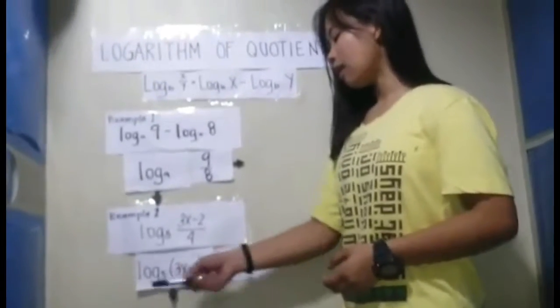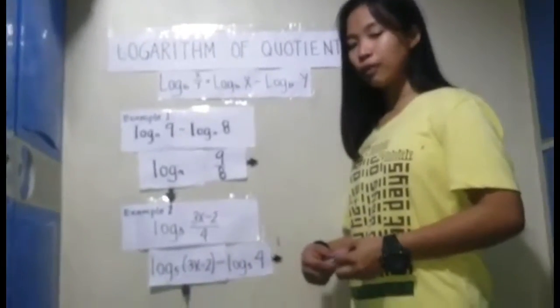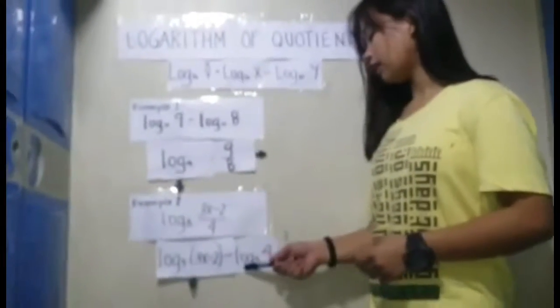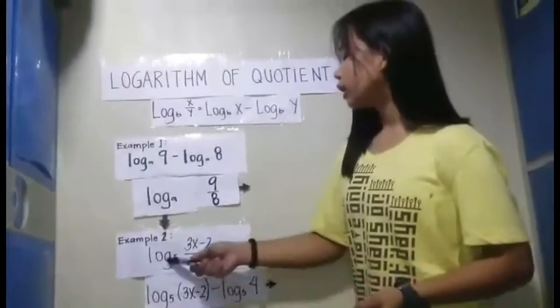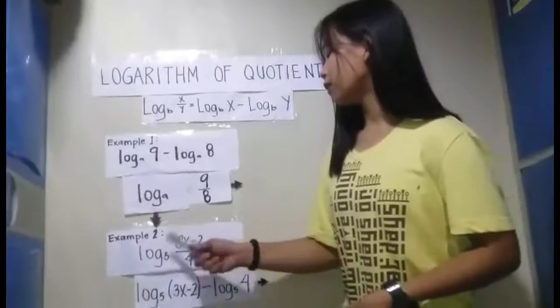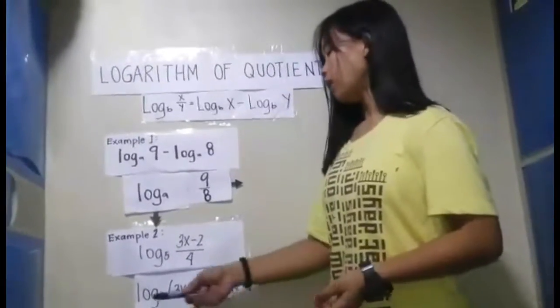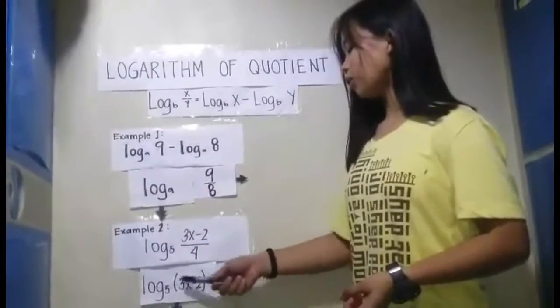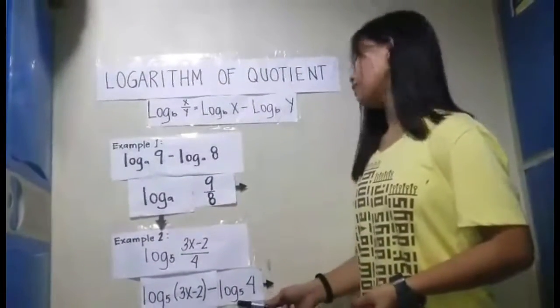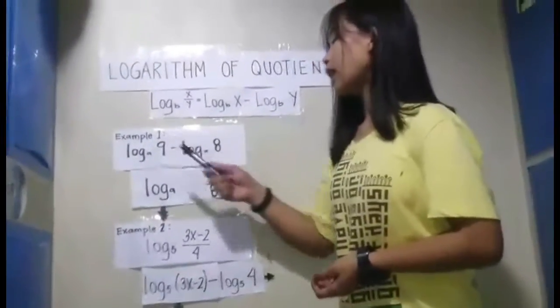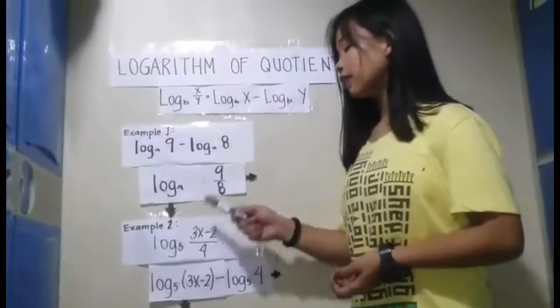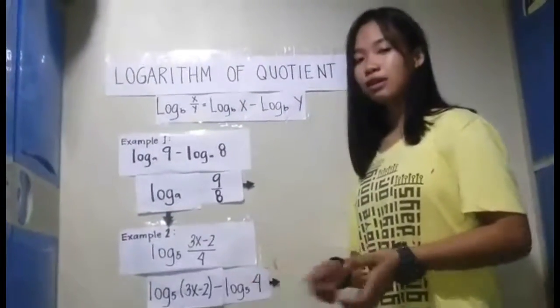The next problem is logarithm of 3x minus 2 over 4 to the base A. The quantity 3x minus 2 and 4 will separate. So, logarithm of (3x minus 2) over 4 to the base A is equal to logarithm of quantity (3x minus 2) to the base A minus logarithm of 4 to the base A. If the given is subtraction, the answer will be in division. If the given is in division, the answer will be in subtraction.